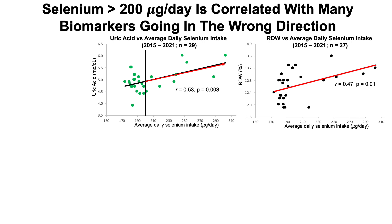Other biomarkers also move in the wrong direction above 200 micrograms per day. My RDW (red blood cell distribution width) increases with higher selenium intake — lower RDW values are associated with youth and lower all-cause mortality risk. Similarly, HDL decreases past the 200 microgram cutoff, whereas intake around 170 micrograms per day correlates with relatively higher HDL. Alkaline phosphatase also shows a positive correlation with selenium intake and goes in the wrong direction, as it increases during aging.